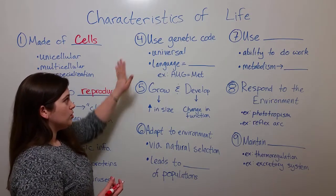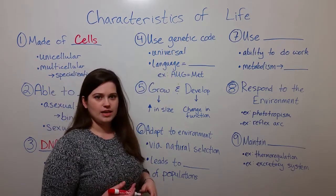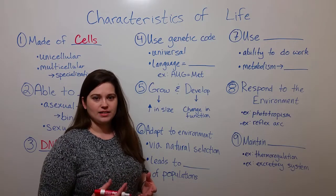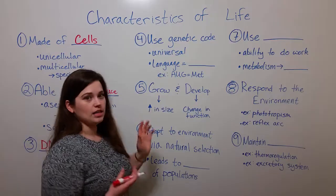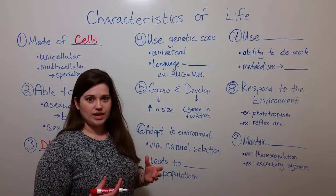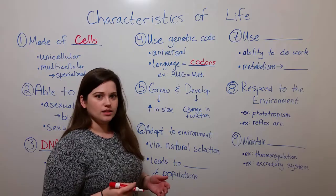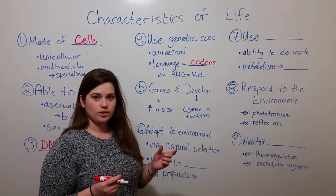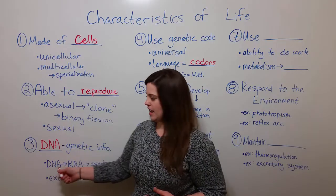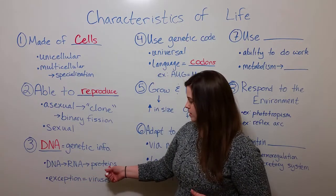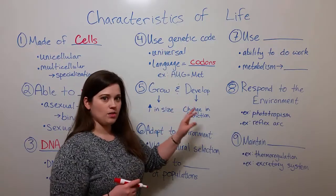Another characteristic is the use of a universal genetic code. The fact that the genetic code is universal is an important piece of evidence that all life evolved from the same common ancestor. In the universal genetic code, there is a language, and the words are basically codons — a series of three nucleotides that code for an amino acid. Nucleotides make up DNA and RNA, and amino acids make up proteins. So with this universal genetic code, the nucleotides in RNA code for specific amino acids and proteins.